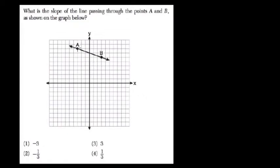What is the slope in this graph? Well, rise over run, down two and then up six. So negative two over six is negative one-third. Choice two.